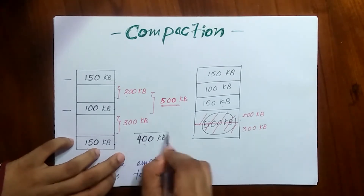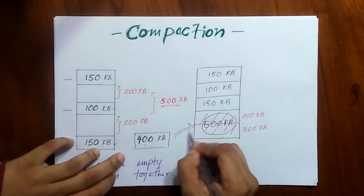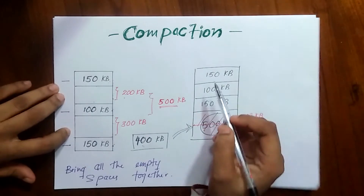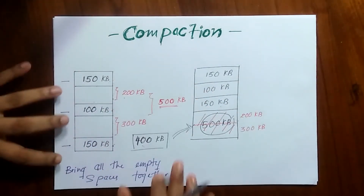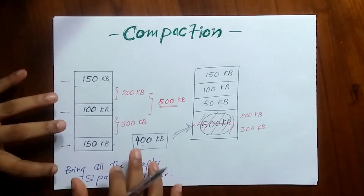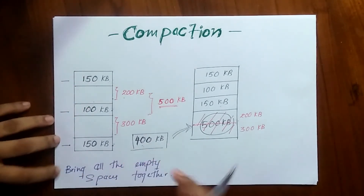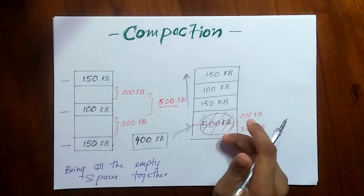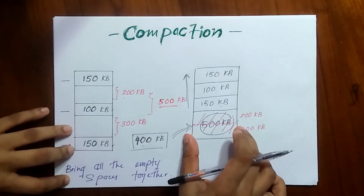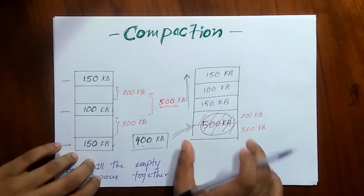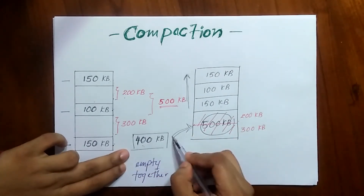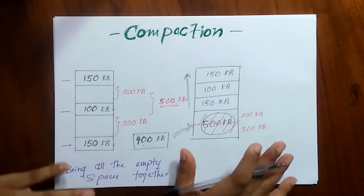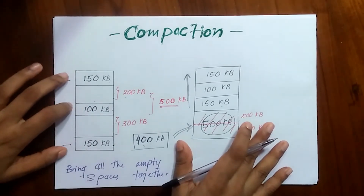Now we have 500 KB of empty space together, so without any issue we can place this 400 KB process into that partition. To summarize the first method: we pull all the occupied partitions to the top of the table, the empty spaces go to the bottom, and then we place the 400 KB process there without any issue.